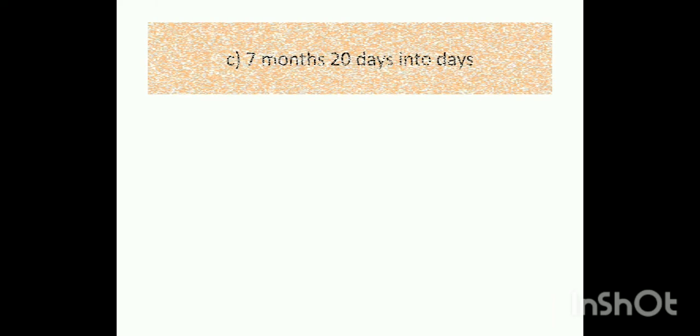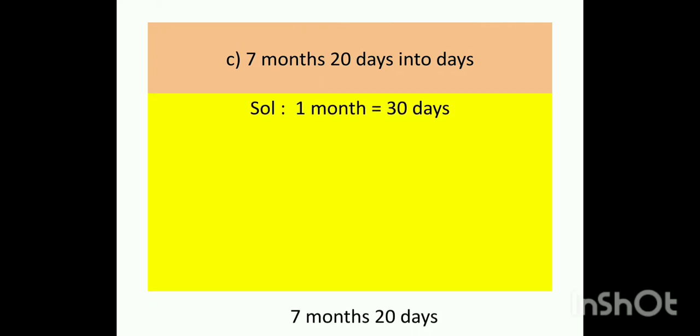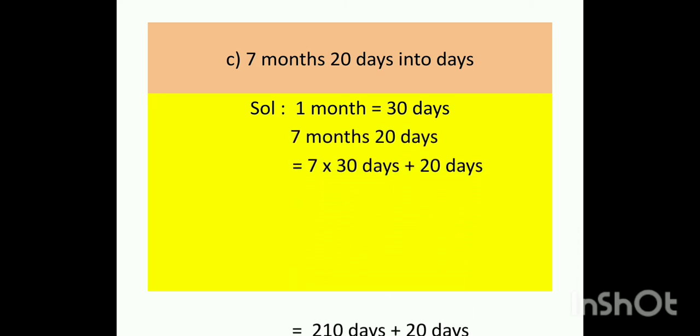Now, next question. Convert 7 months 20 days into days. Children, we know 1 month is equal to 30 days, but maybe 31 also, maybe 28 days also. But in conversion, we will take 1 month is equal to 30 days always. So 7 months 20 days is equal to 7 multiplied by 30 days plus 20 days. 210 days plus 20 days, and our answer is 230 days.